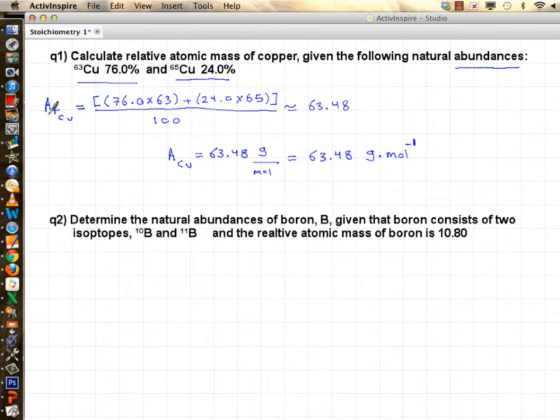So atomic mass of copper is 63.48 grams per mole, relative atomic mass of copper is the same number with no unit. So relative, since it's been compared, has no units.